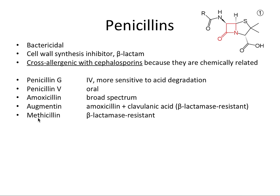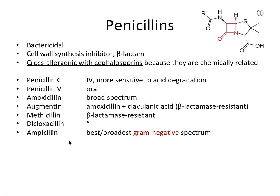Augmentin handles beta-lactamase-producing bacteria, and we also have methicillin and dicloxacillin as examples for that. Ampicillin has the best and broadest gram-negative spectrum — so if a question asks about an antibiotic specifically effective against gram-negative bacteria, ampicillin should come to mind. Lastly, carbenicillin is used specifically against Pseudomonas bacteria. Notice that all of them, except Augmentin, share the '-cillin' suffix, helpfully reminding us they're in the penicillin category.